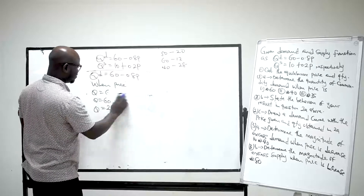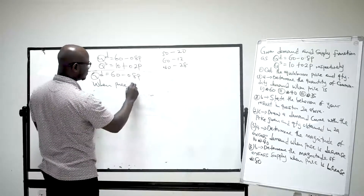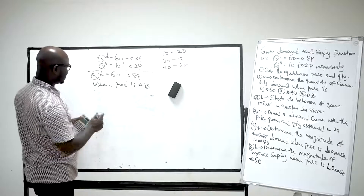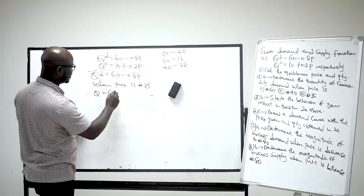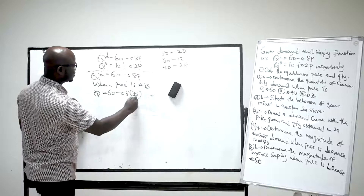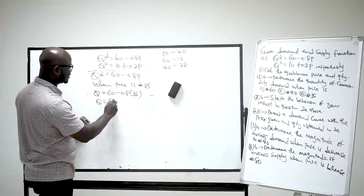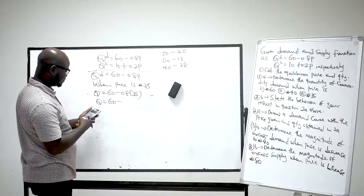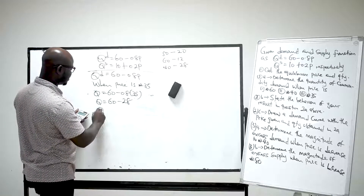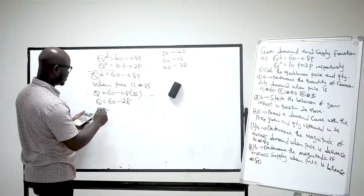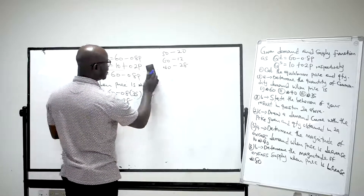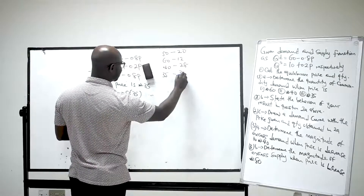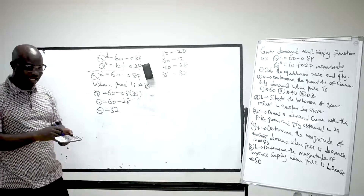When price is 35: Q = 60 − 0.8(35) = 60 − 28 = 32. So when price equals 35 the quantity demanded is 32. All of this is in line with the law of demand — when price decreases the quantity demanded increases.